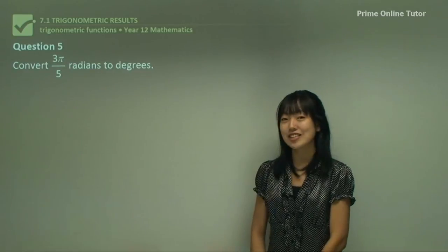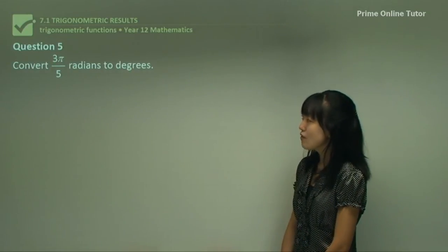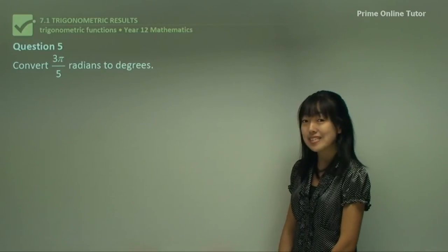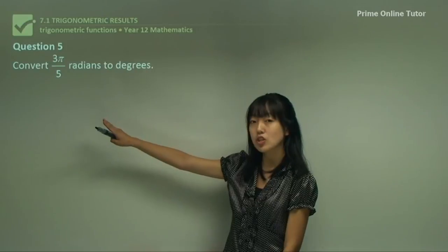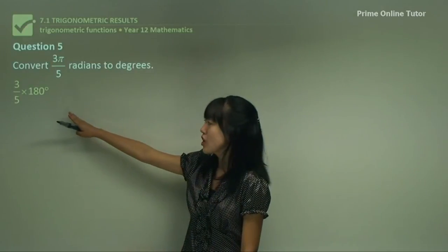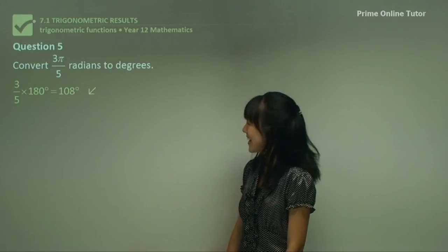This question is not bad at all, it's actually easier than some of the other questions we've been looking at. Converting 3π/5 radians into degrees. Whenever you see π you just substitute 180 degrees. You just need to put this into the calculator and you get a simple answer of 108 degrees.